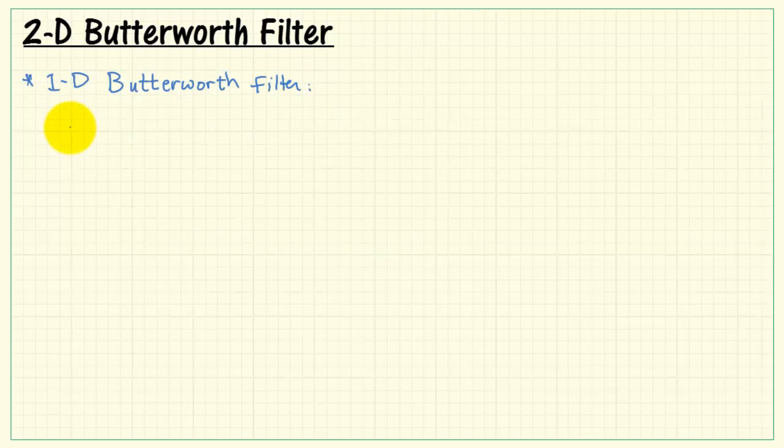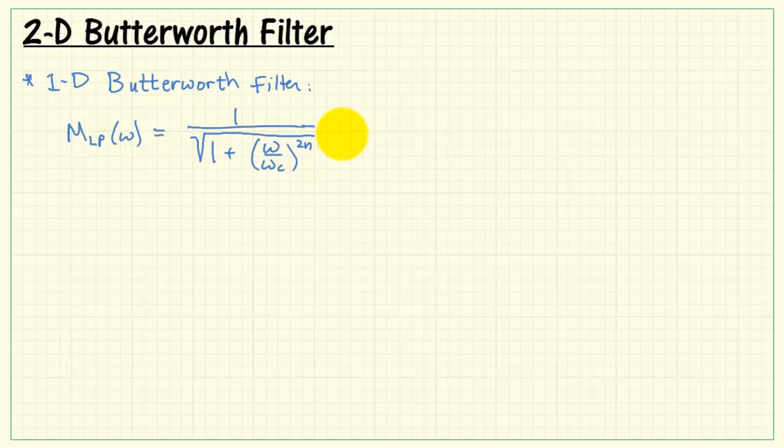I'm going to begin with a one-dimensional Butterworth filter frequency response, and it has an equation that looks like this. I should point out that if you had other filter shape, you could easily apply the method that I'm discussing here.